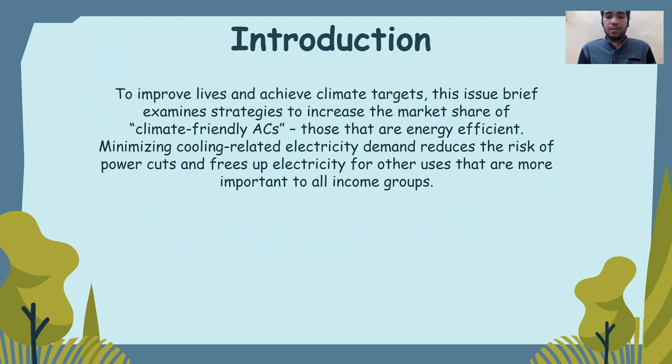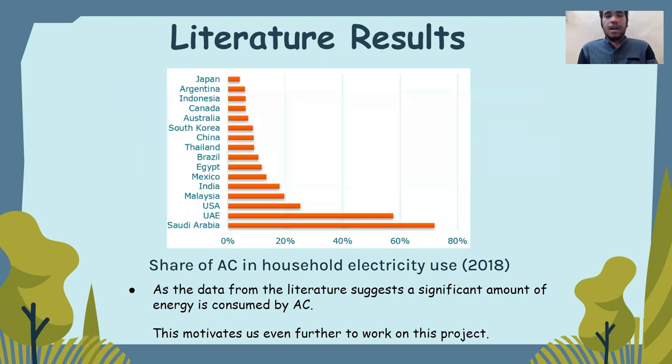This issue brief looks at ways to boost the market share of climate friendly ACs, those that are energy efficient in order to enhance life's unmade climate goals. Reducing cooling related electricity consumption lowers the danger of power outages and frees up electricity for other more vital purposes for people. As we can see from the graph that a significant amount of energy is consumed by AC, this motivates us even further to work on this project.